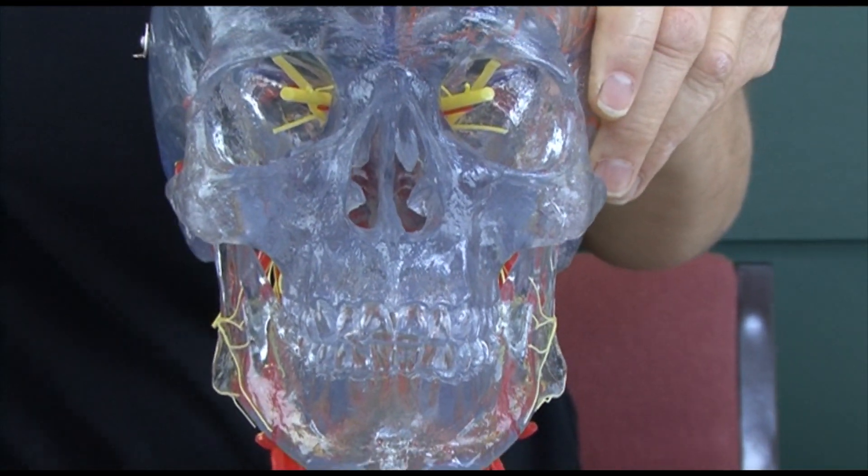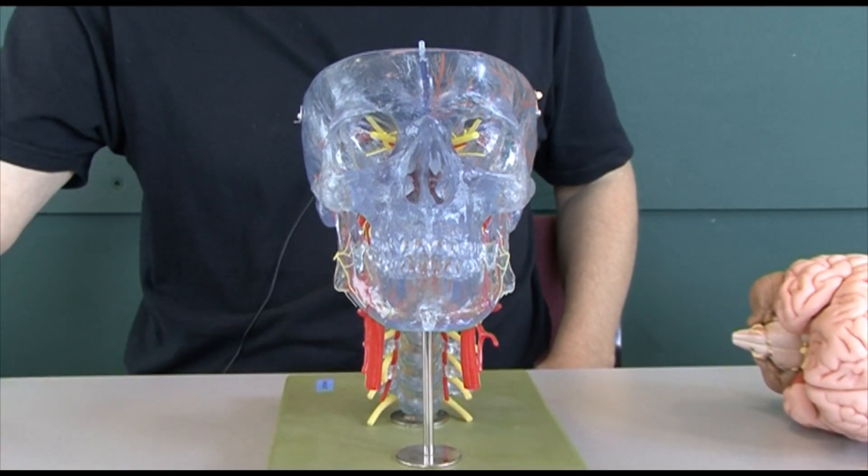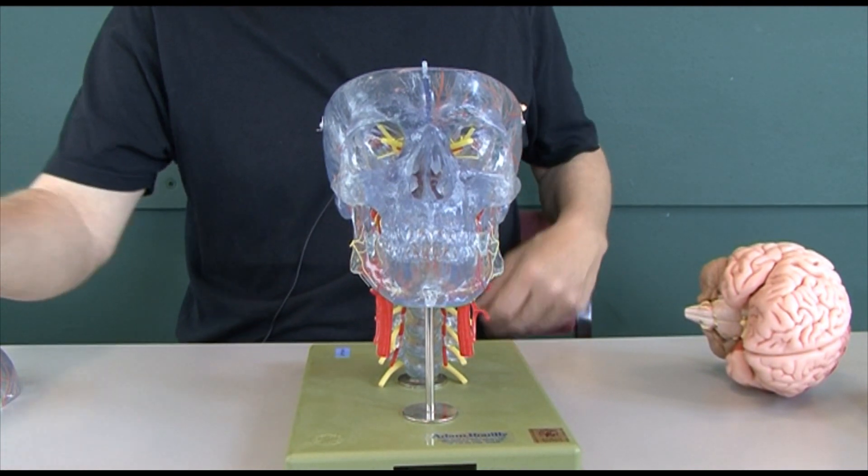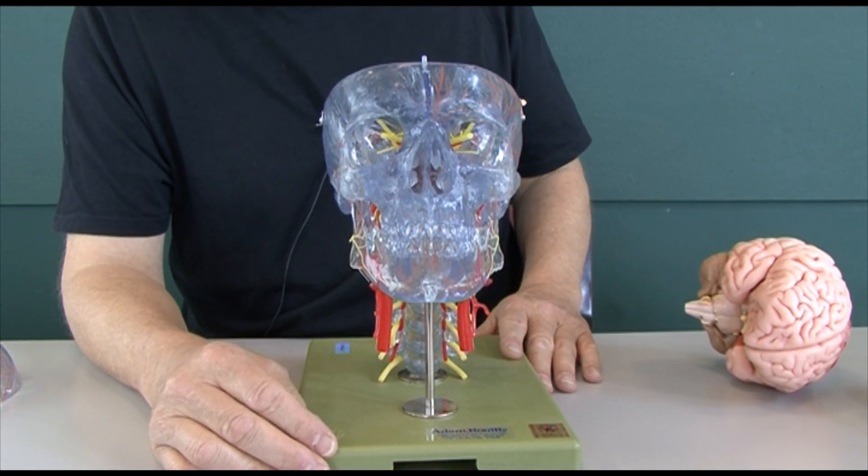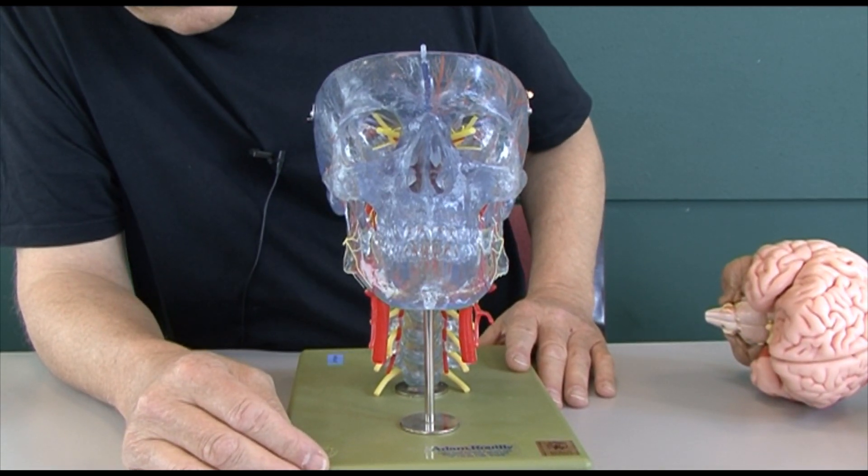So that just gives us some insight into the complexity of the relationship between the brain and the skull, the blood vessels, and the nerves taking information to and from the brain.